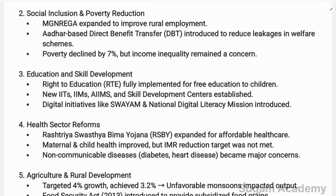For social inclusion and poverty reduction, MGNREGS was expanded to improve rural employment. Aadhaar-based Direct Benefit Transfer (DBT) was introduced to reduce leakage in welfare schemes, transferring funds directly to beneficiaries. However, income inequality remained a concern despite these measures.